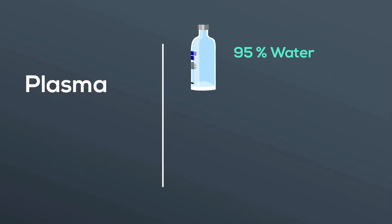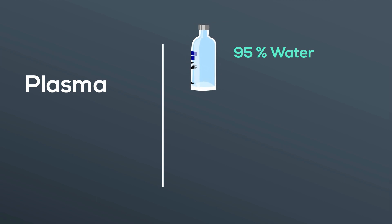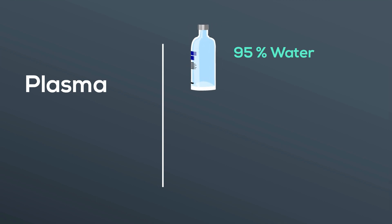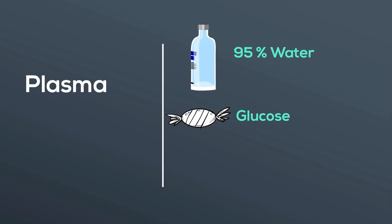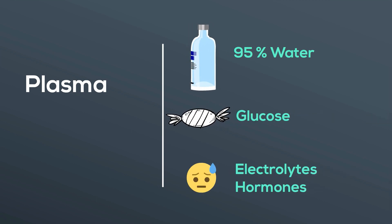Plasma is the liquid portion of the blood. It is 95% water but contains some very important ingredients such as glucose, electrolytes, hormones, and proteins.